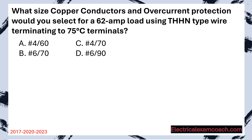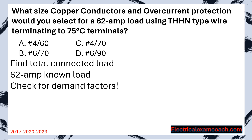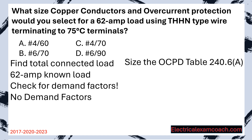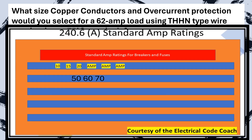What size copper conductor and overcurrent protection would you select for a 62 amp load using THHN type wire terminating to 75 degrees C terminals? Step one: find our total connected load. It starts at 62 amps but we must check for demand factors — with no special pieces of equipment mentioned or the fact that it's running for three or more hours, there are no demand factors. Now we size our overcurrent protective device. We head to our table with a 62 amp known load and choose the next size up, which puts it on a 70.